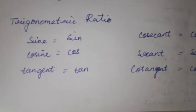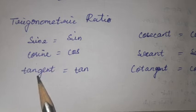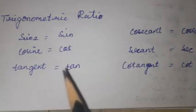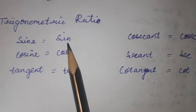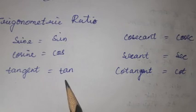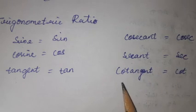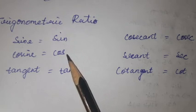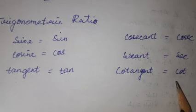Next, we have to see the trigonometric ratios. The trigonometric ratios are: sine, cosine, tangent, cosecant, secant, and cotangent. For trigonometry, we use the shortest forms: sine is written as sin, cosine as cos, tangent as tan, cosecant as cosec, secant as sec, and cotangent as cot. So how many ratios are there? Six ratios.